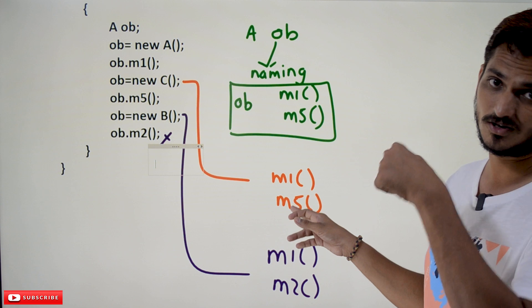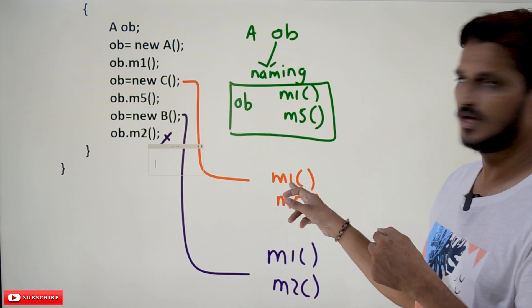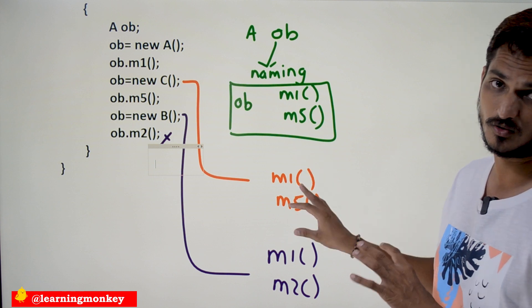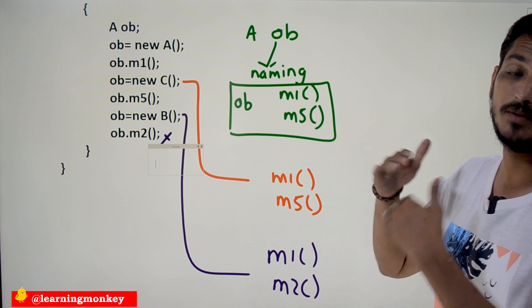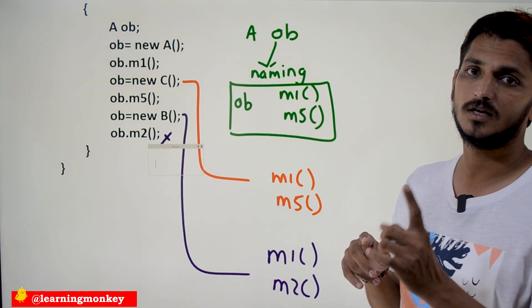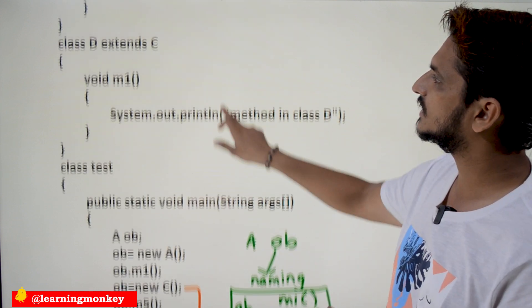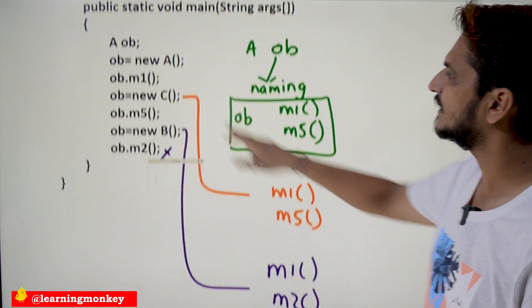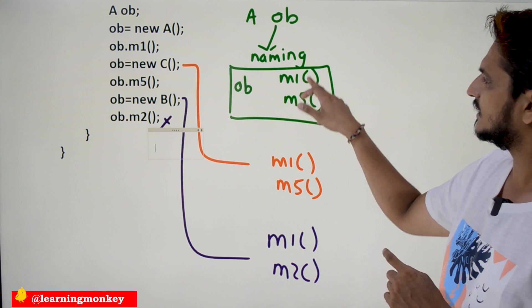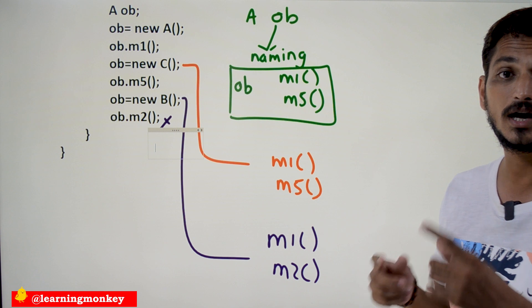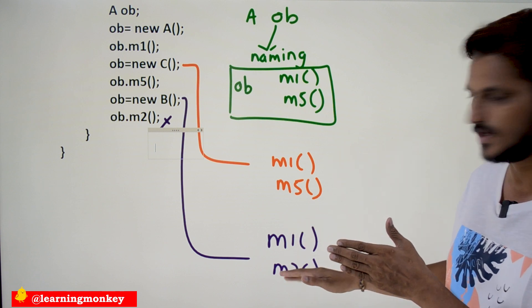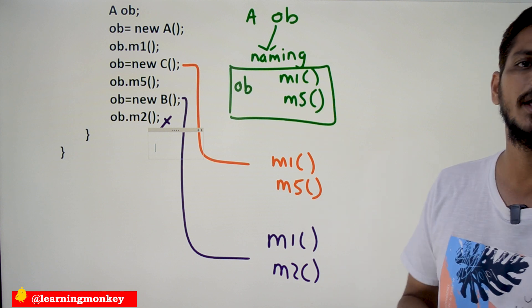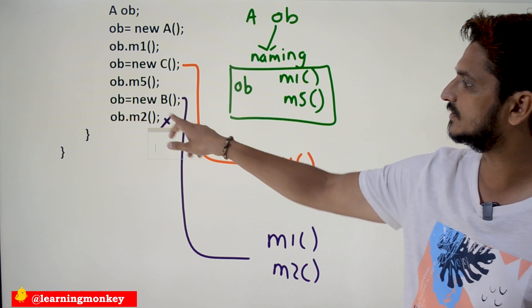OB.M5() calls the M5 method from the class C object. OB.M1() calls M1 from the class C object. Now consider OB = new B(). Class B has M1 and M2 methods, but the naming of reference variable OB is M1 and M5. M1 matches the naming but M2 does not match — so we cannot call M2 method using OB.